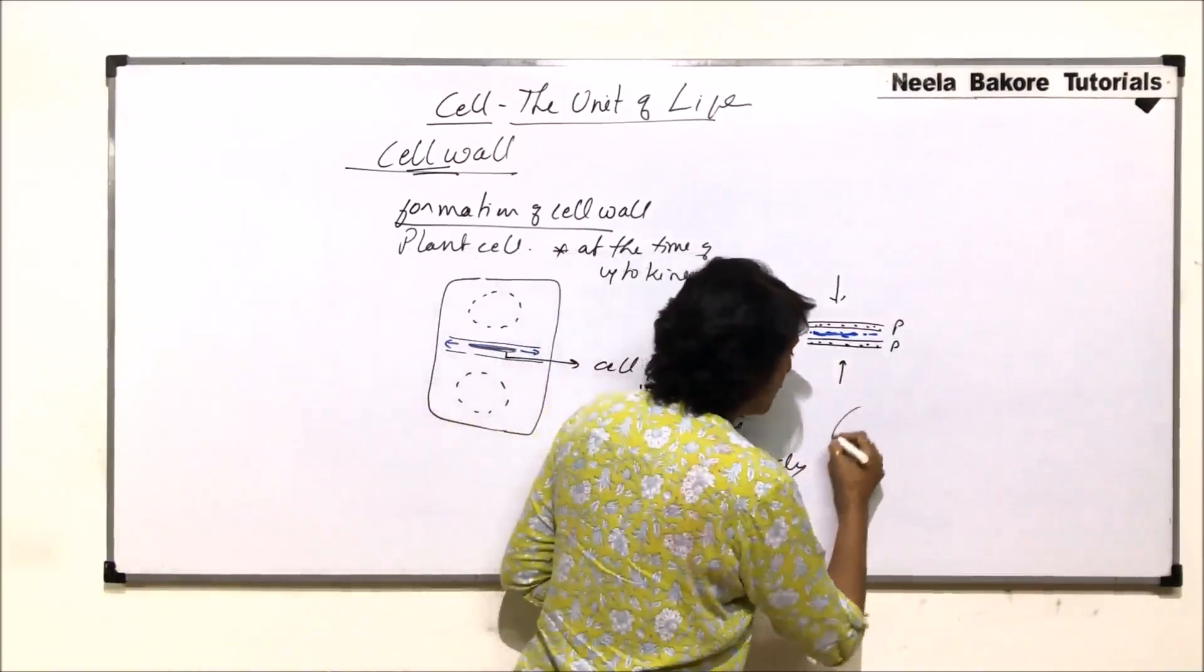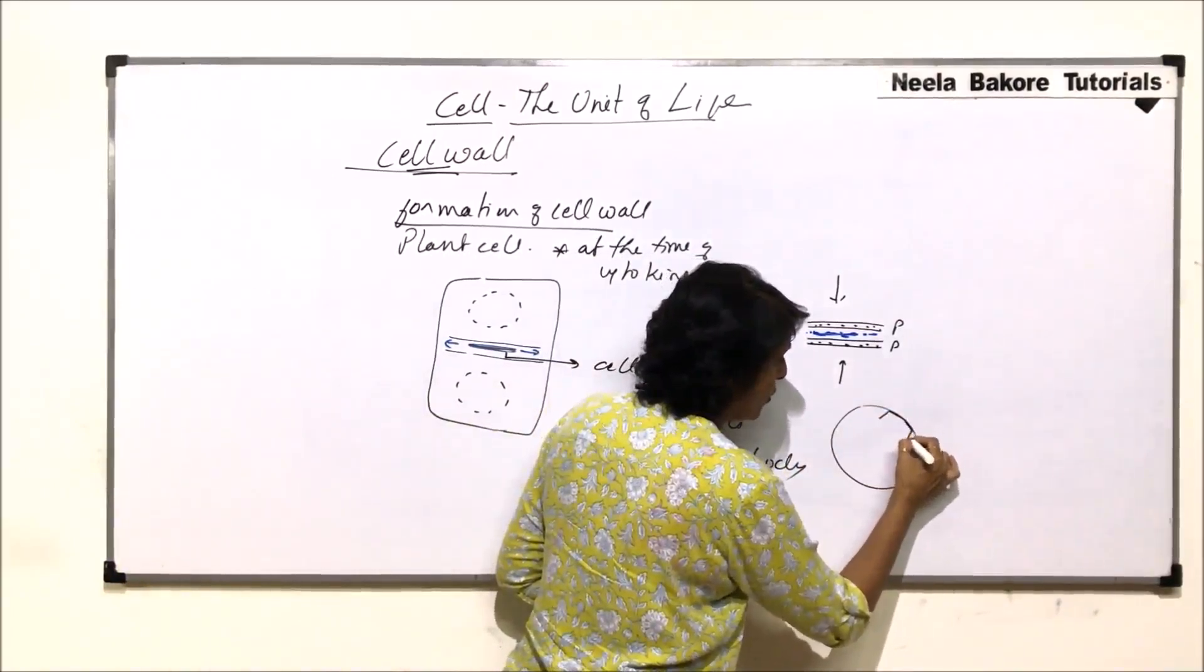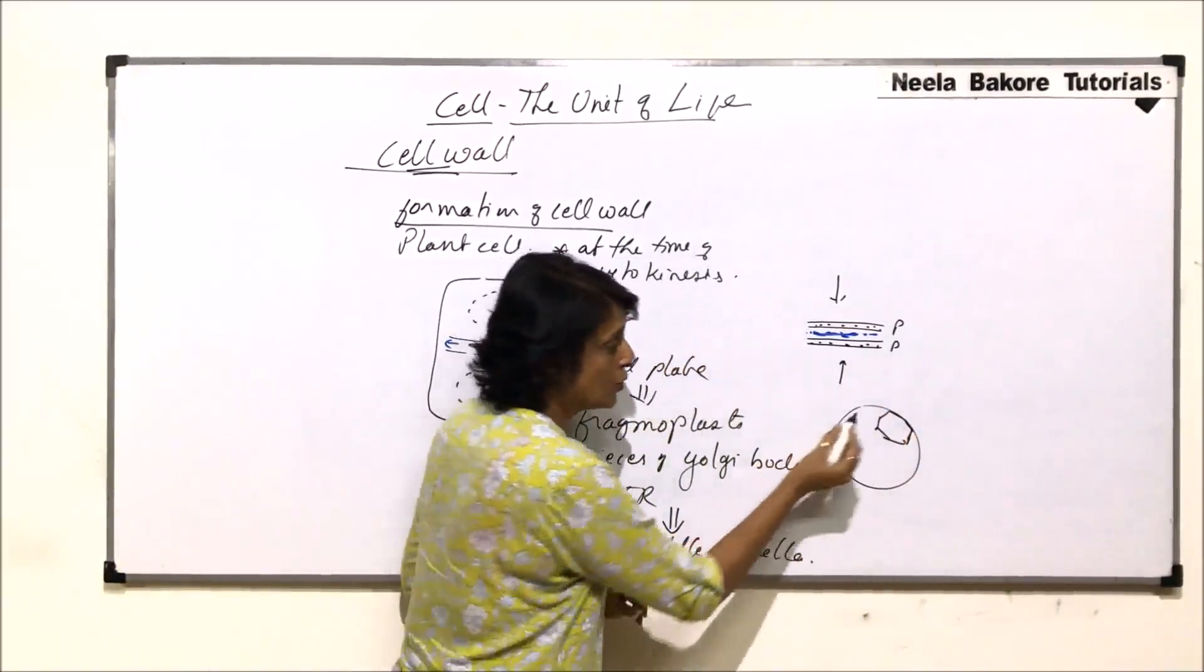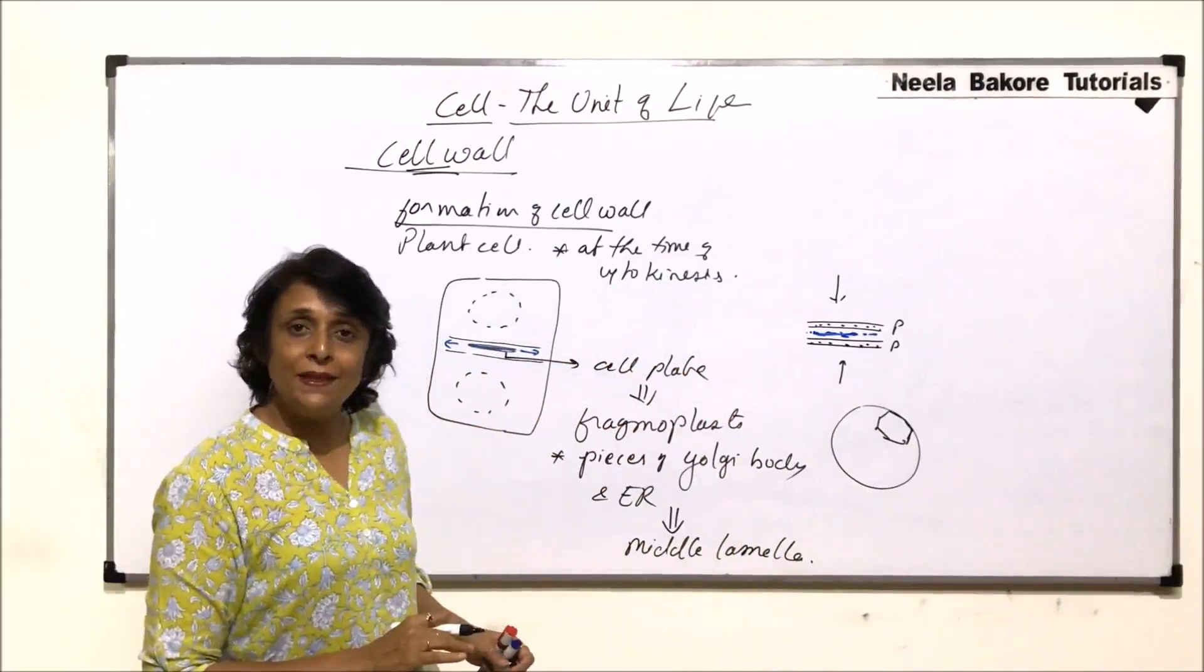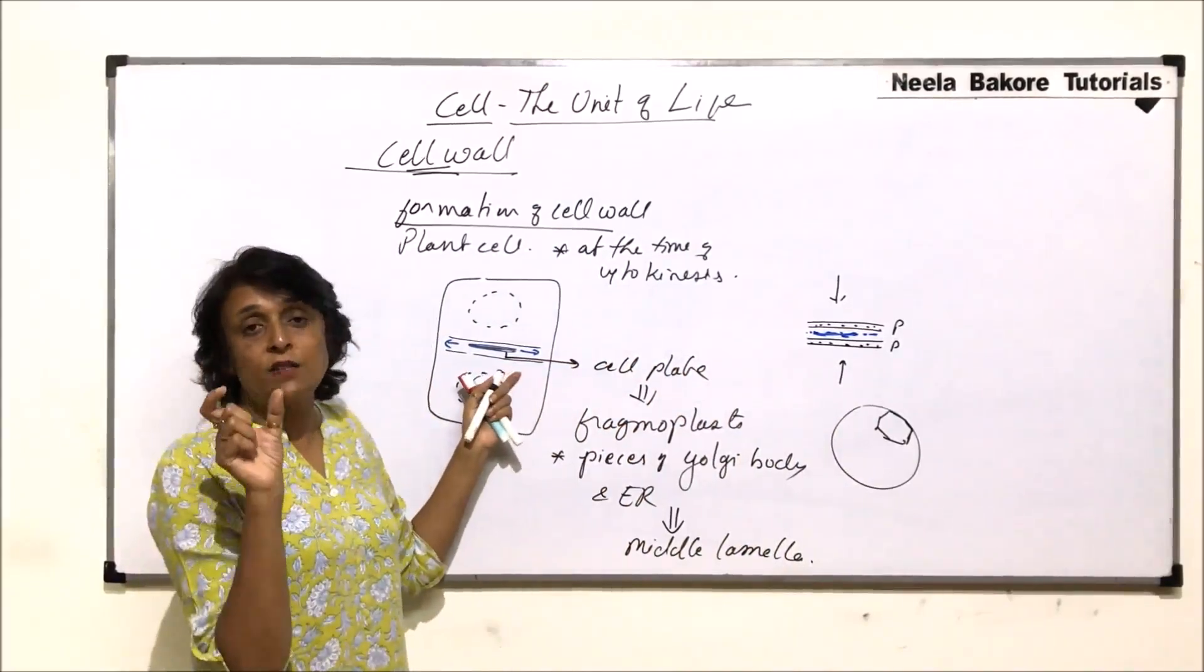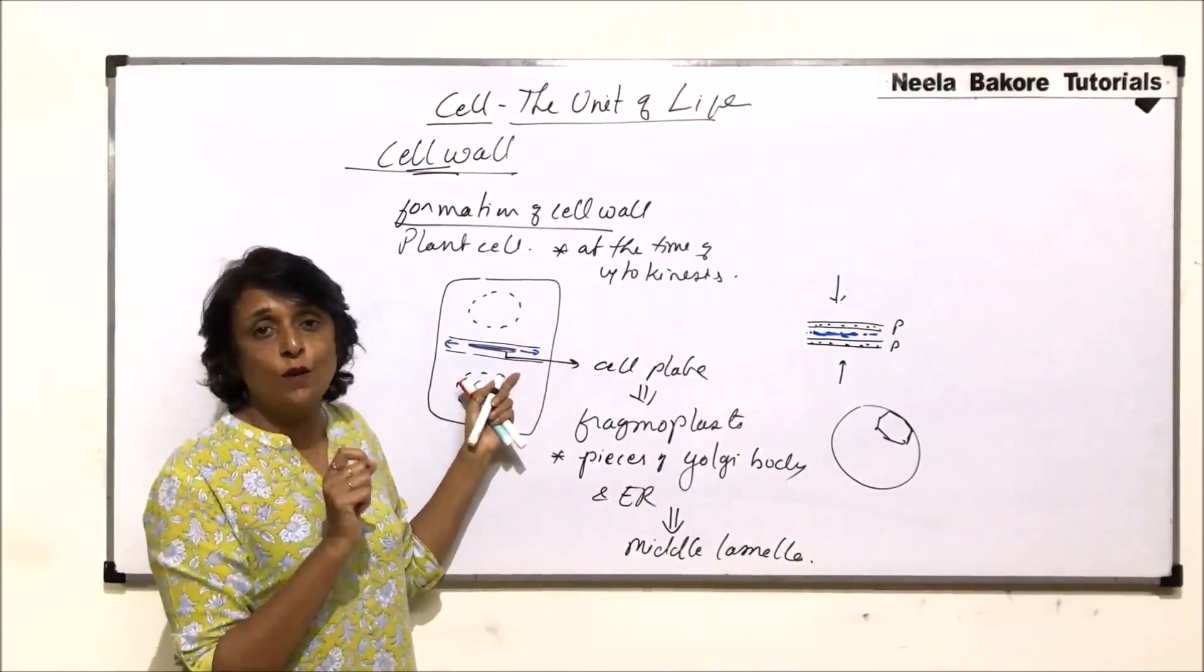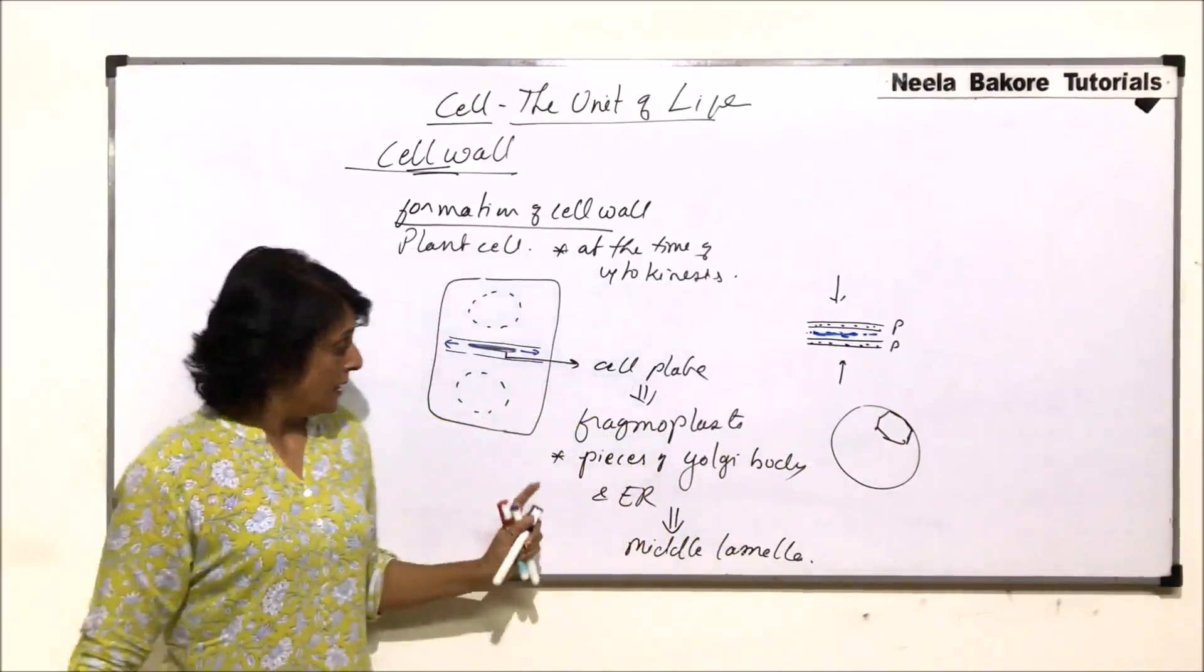The only difference is the outermost cell. Suppose we are talking of a fruit and say this fruit has this outermost cell. This cell is the outermost, so the outermost part is not having that middle lamella, because middle lamella is formed by this phragmoplast which are pieces of Golgi and ER. So outer ones will not have it.